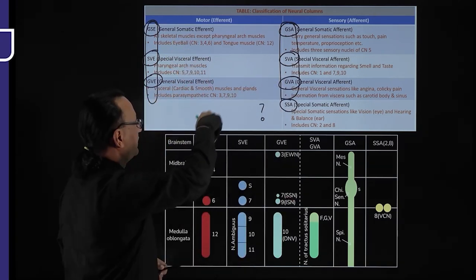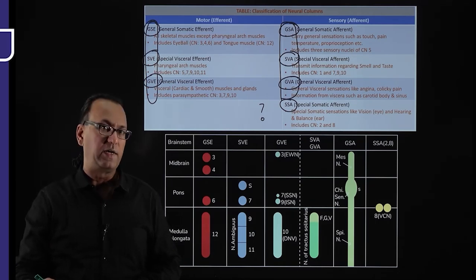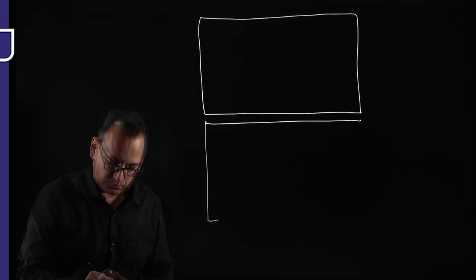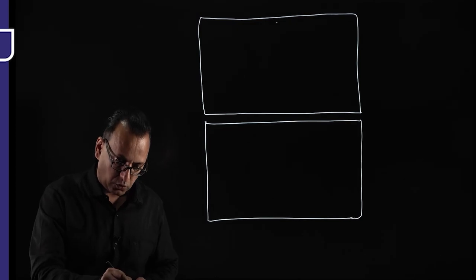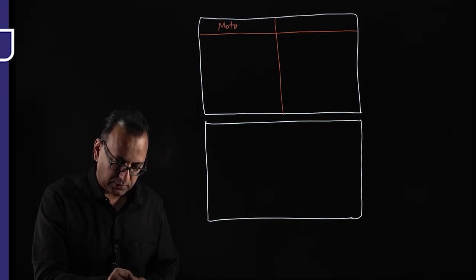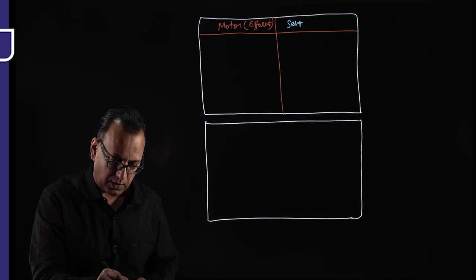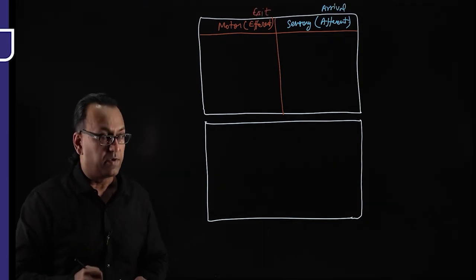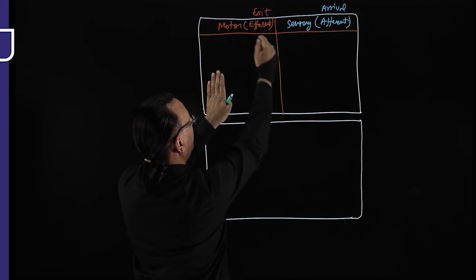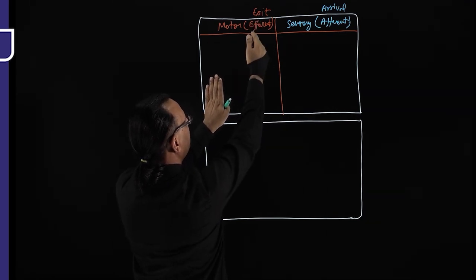We draw two tables side by side. The upper table has motor/efferent and sensory/afferent divisions with three motor and four sensory columns. The lower table has rows for midbrain, pons, and medulla oblongata, with seven neural column columns. We will place nuclei under the appropriate neural column and brainstem level.